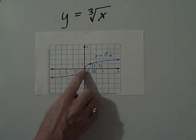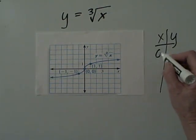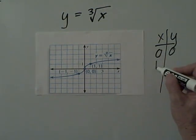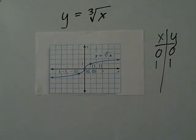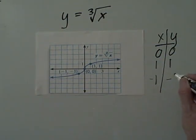Notice again we could use a t-table to find our initial values. So we would have x and y. x cubic root of zero is zero, hence the middle point. The cubic root of one is one. And the cubic root of negative one is negative one. That's hence our three points.